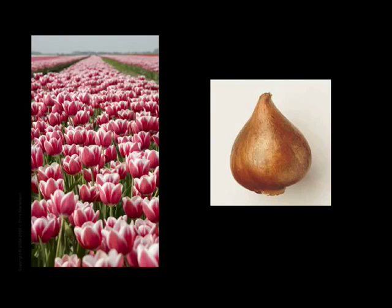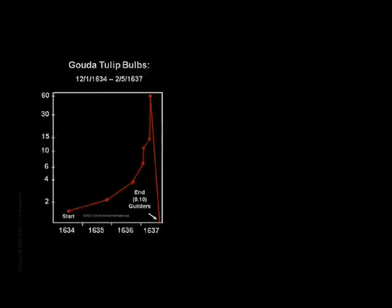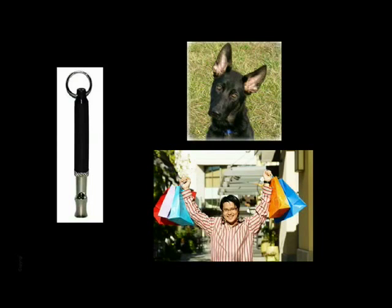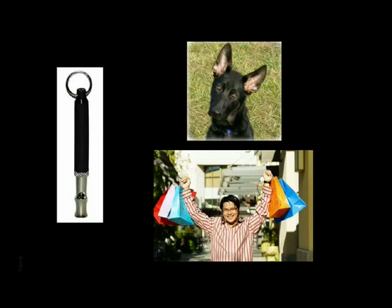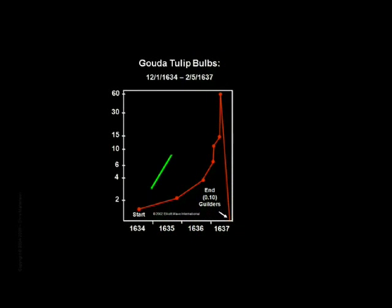It is recorded that the tulip craze ended even more suddenly than it began, ending almost in a single day at the start of the new selling season in February of 1637. On that day, a silent whistle blew that only dogs and buyers could hear, and prices crashed. This example illustrates two characteristics of bubbles: first, that they are self-reinforcing on the way up, meaning that higher prices become the justification for higher prices; and second, that once the illusion is lifted, the game is suddenly and permanently over.